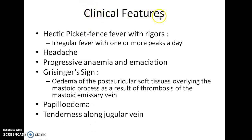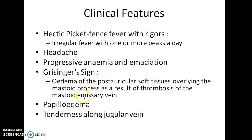The clinical features of lateral sinus thrombophlebitis include hectic picket fence fever with rigors — an irregular fever with one or more peaks a day, which is characteristic of this disease. There will also be headache, progressive anemia, and emaciation. Grissinger's sign will be seen, which is edema of the post-auricular soft tissue overlying the mastoid process as a result of thrombosis of the mastoid emissary vein.